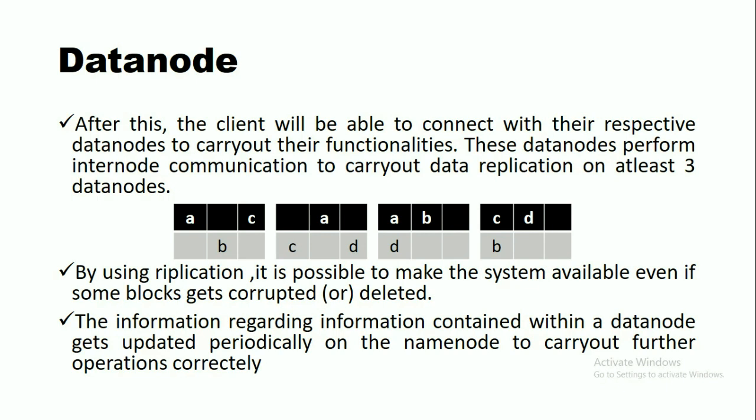At least three DataNodes will be present. By using replication, it is possible to make the system available even if some blocks get corrupted or deleted. The information contained within a DataNode gets updated periodically on the NameNode to carry out further operations correctly.